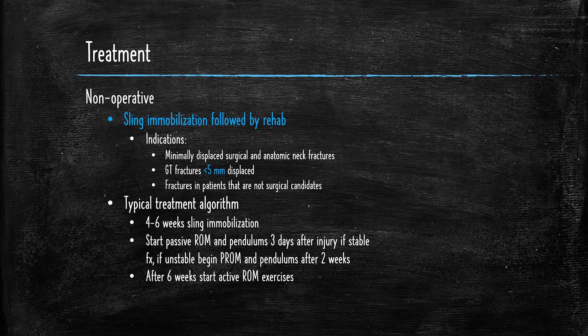So we typically take these patients, put them in a sling for six weeks. We can start passive range of motion depending on how much displacement is in the fracture. We can get them moving between three days and two weeks. And then we get them back into active range of motion exercises after six weeks.